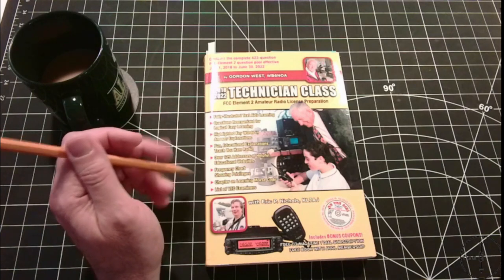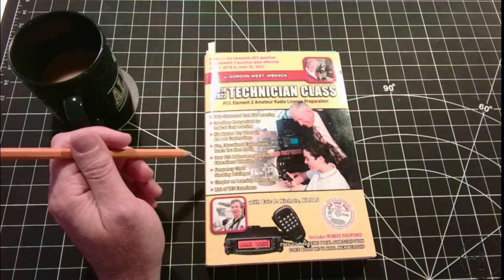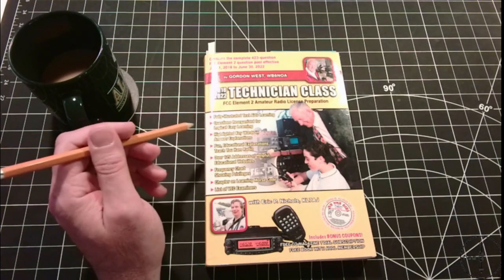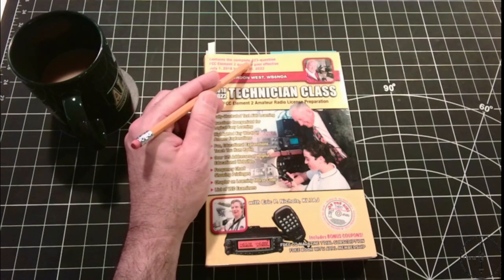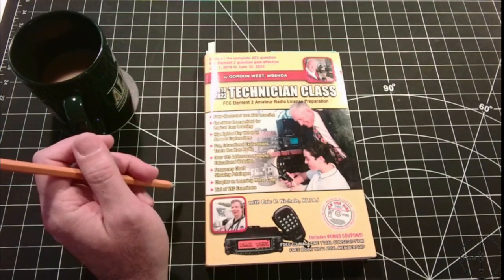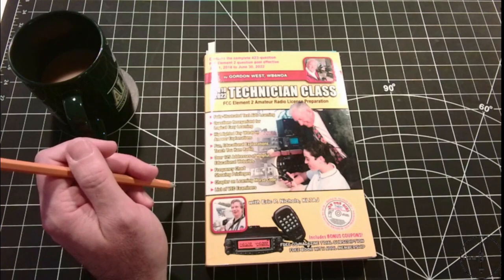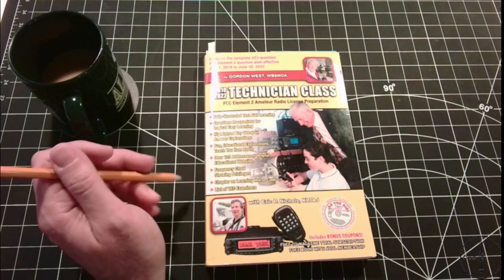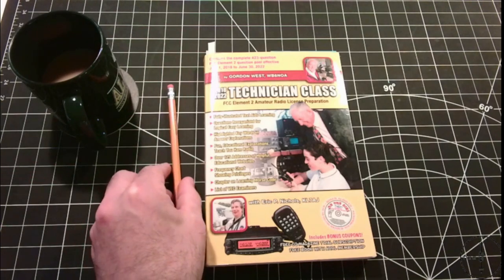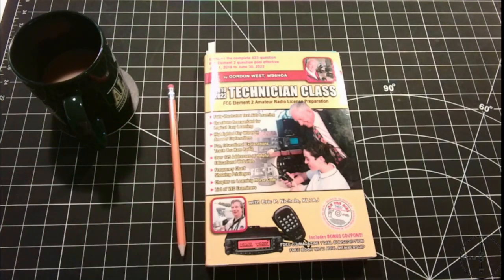The Gordon West study guide includes the entire question pool. When I was studying for my technician license there were 423 questions in the pool. My understanding is each question pool is updated once every four years, and as of this video the current pool for the 2022 through 2026 period is 411 questions. However, out of a given question pool, the technician class exam only consists of the 35 questions I mentioned earlier, and you'll need to correctly answer 26 of those to pass.